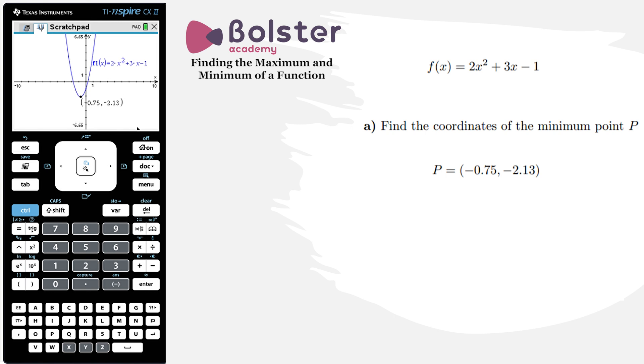So the max-min function doesn't find turning points. The max-min function finds the largest or the smallest value within the upper and lower bounds that you've given the calculator.